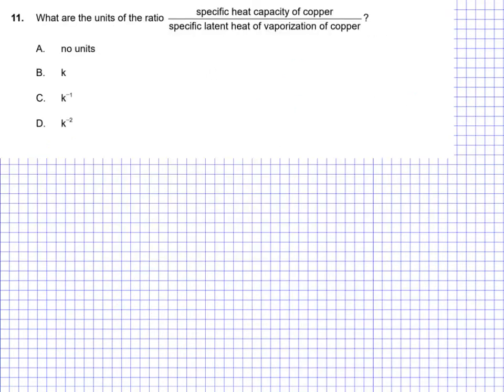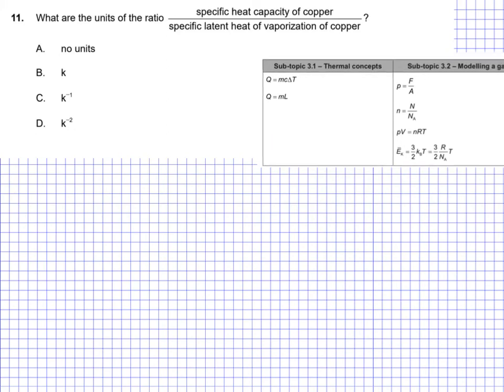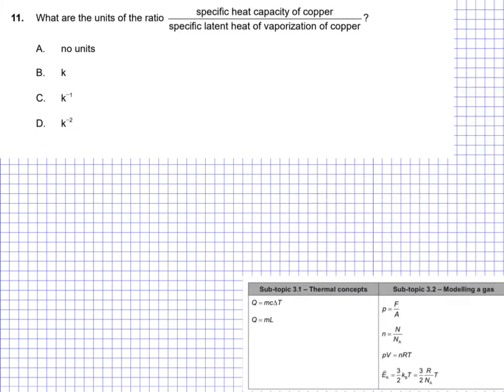Okay, so question 11, we have a ratio question. IB sure likes to ask ratio questions, and that's okay. This one is a ratio question of specific heat capacity of a metal copper divided by or over the specific latent heat of vaporization of copper. So we're dealing with specific heat capacities and latent heat capacities of certain things. So we're going to need some formulas. So let's just bring this into play here. I'll put it at the bottom.